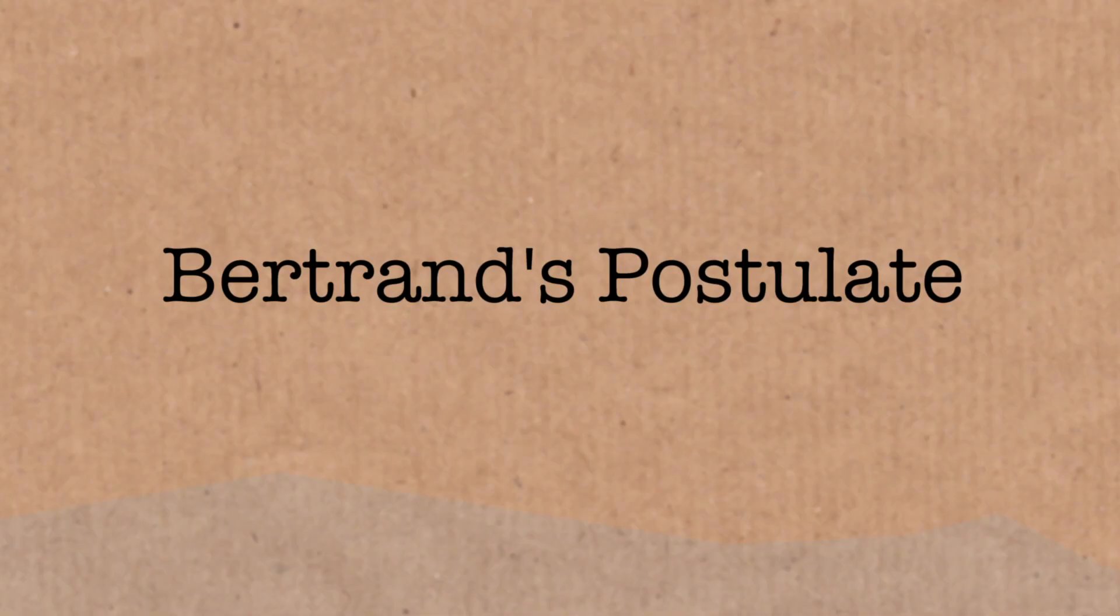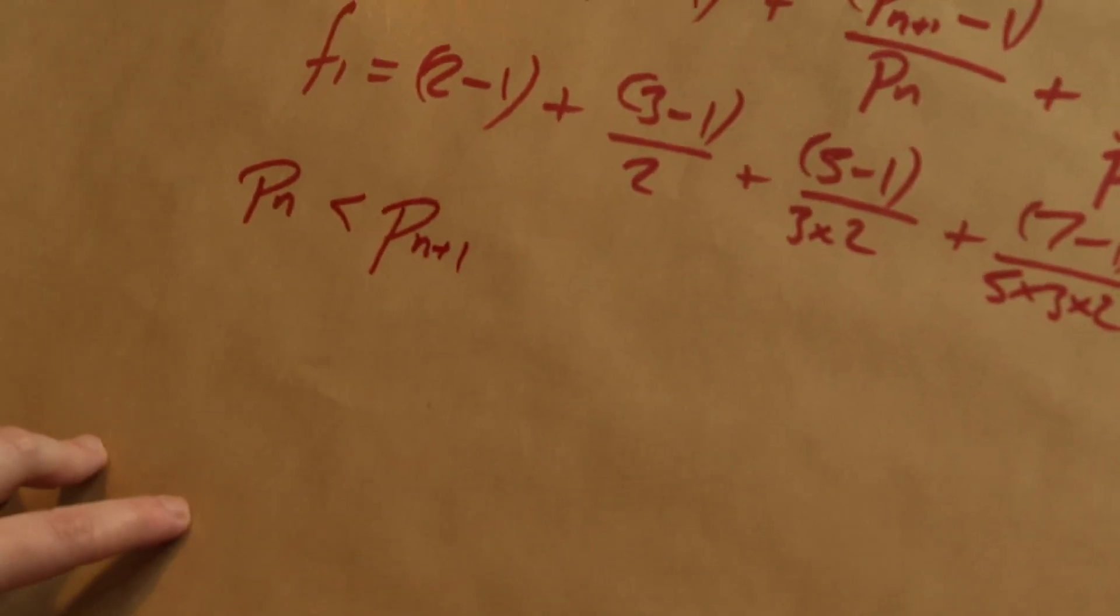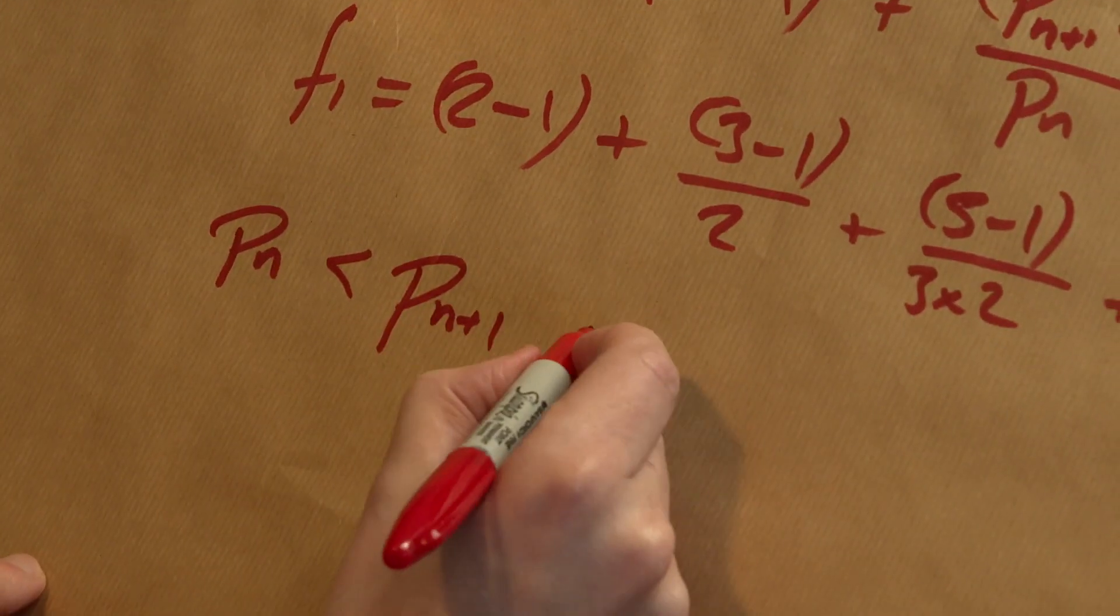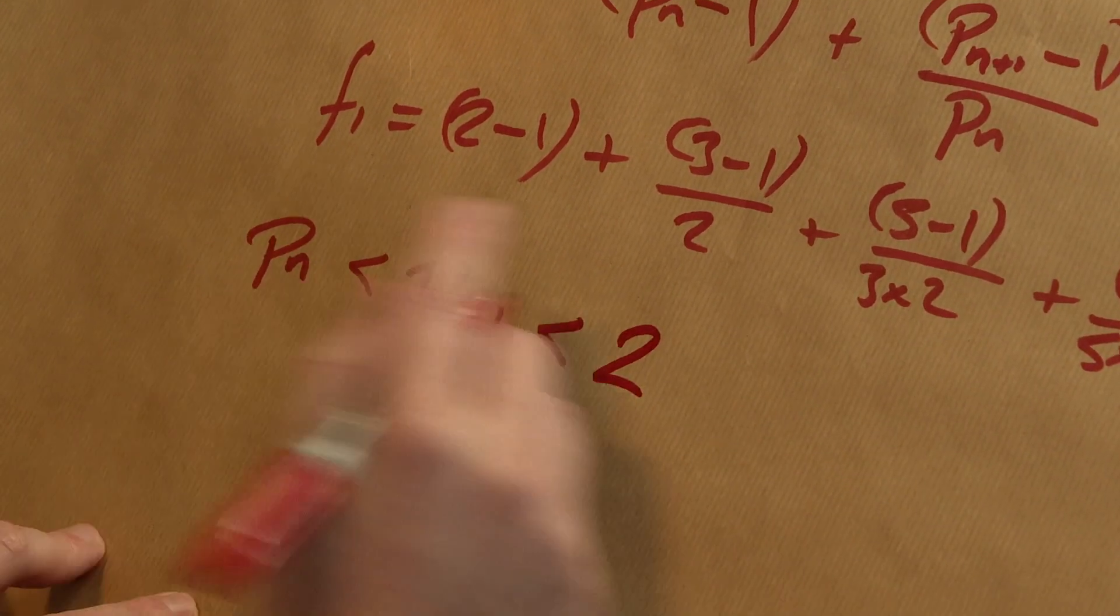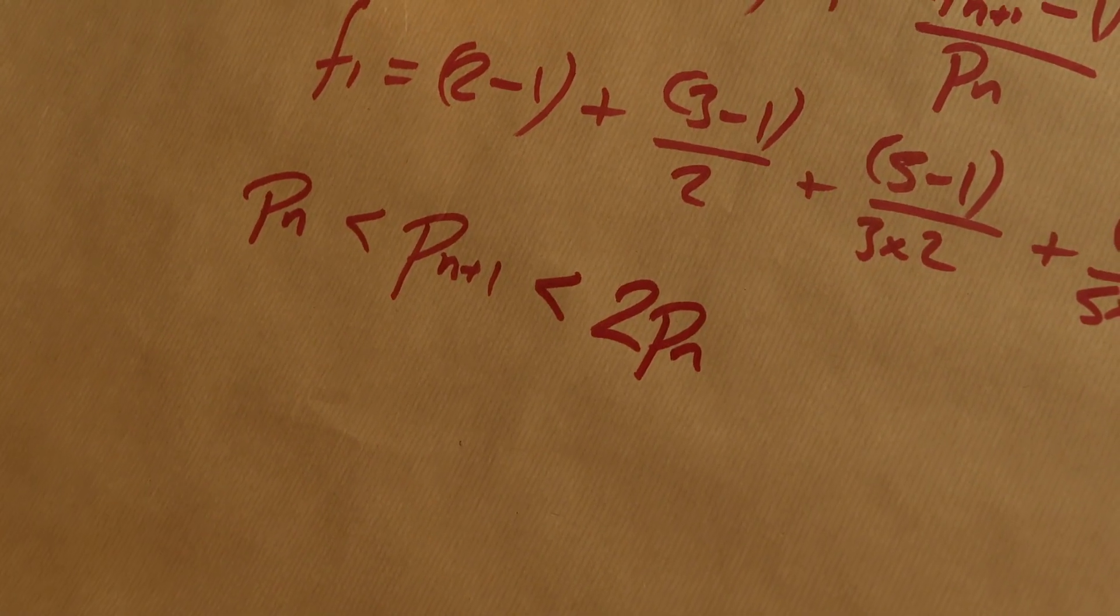We're going to use a property of primes called Bertrand's Postulate. It's a big thing, actually, when you're studying primes. If you've got the nth prime, the next prime is obviously bigger, but it is smaller than twice the nth prime. I'm not going to do the proof for you, it's totally possible to do for yourself.